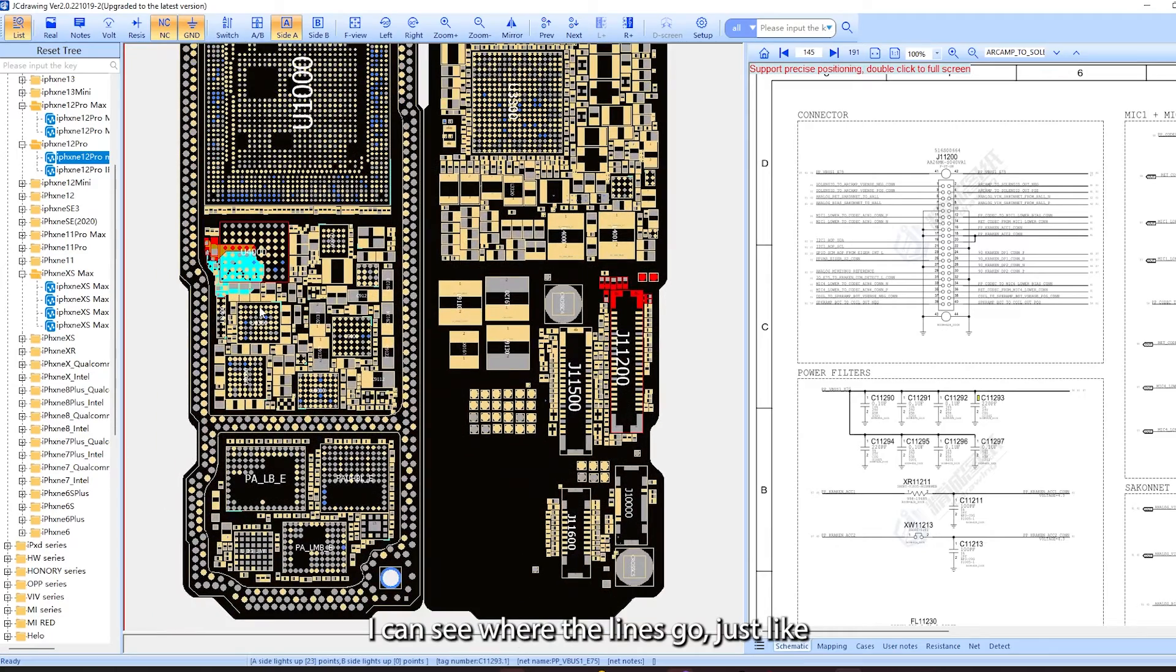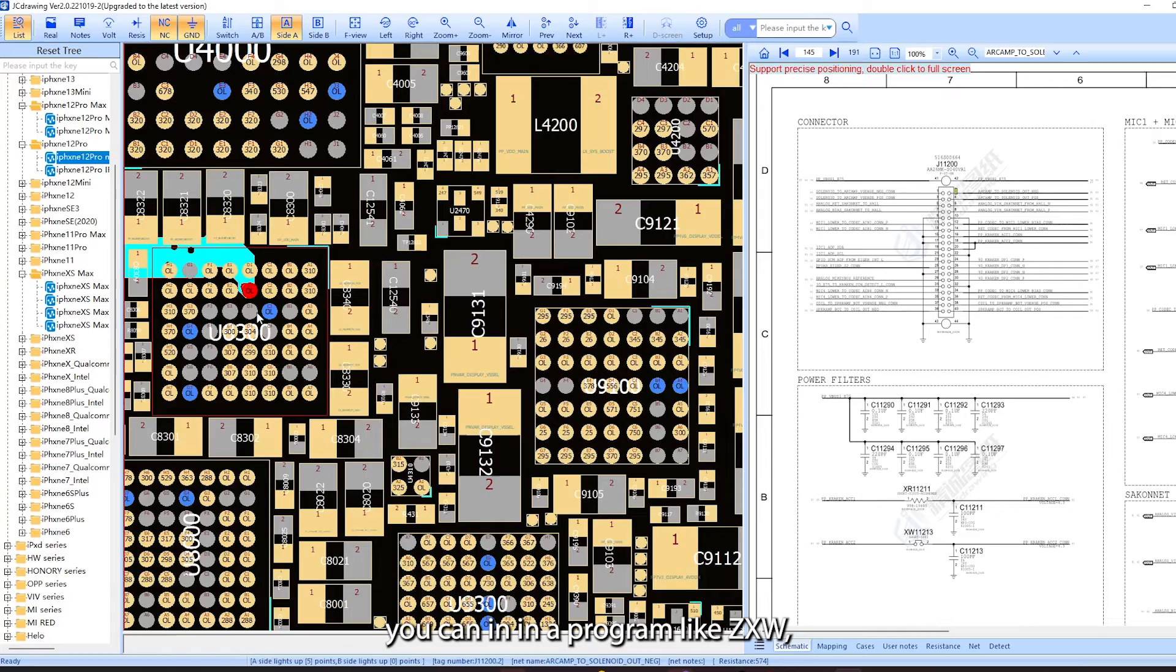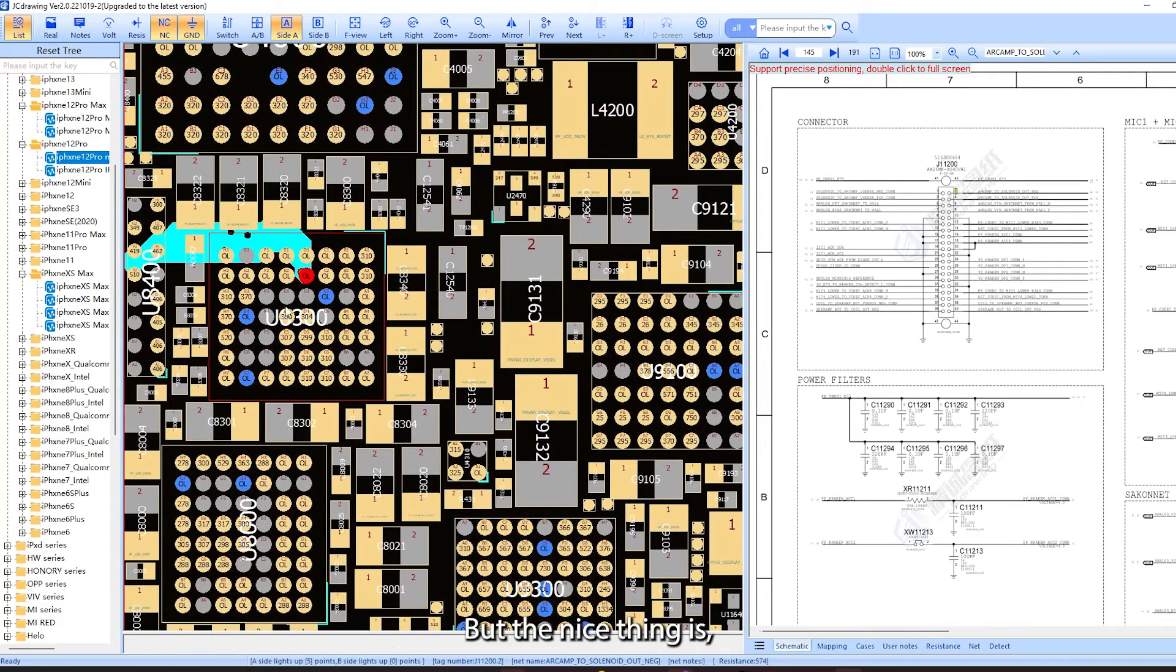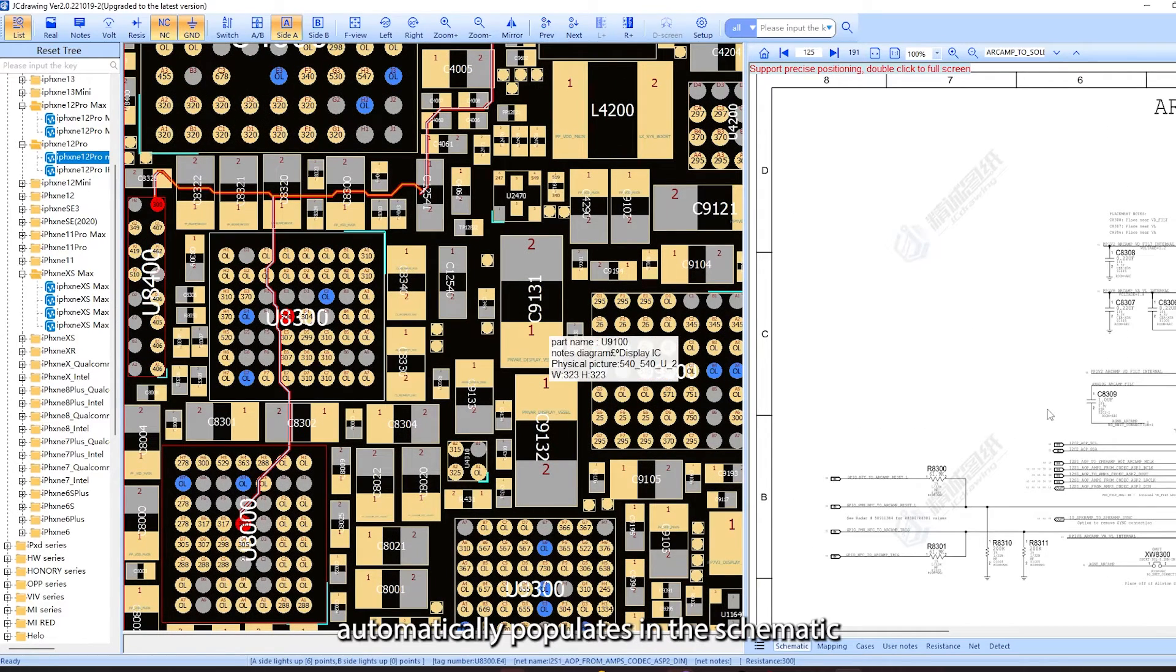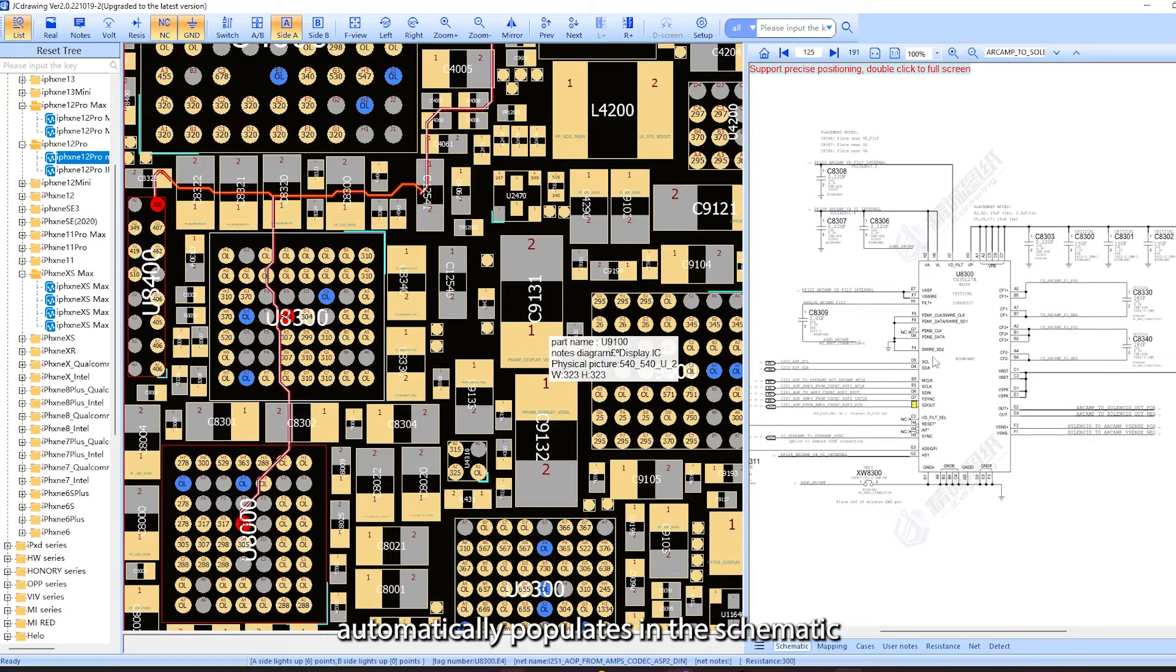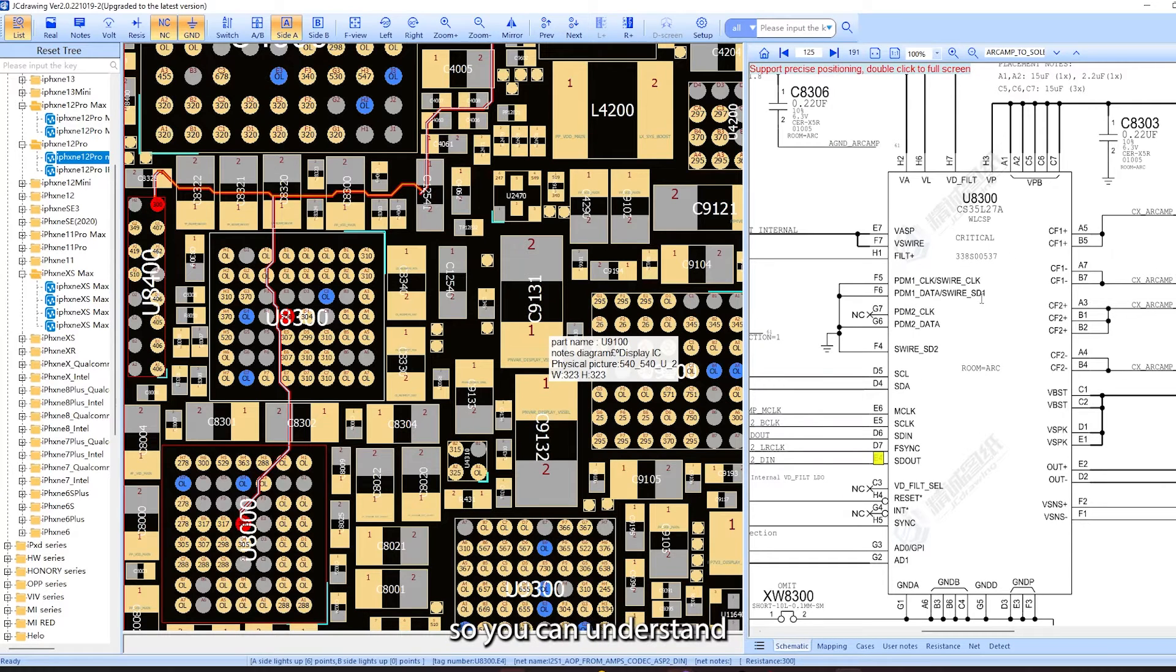I can see where the lines go just like you can in a program like ZXW, but the nice thing is when you click on it, it automatically populates in the schematic where you are clicking so you can understand what's happening in that circuit.